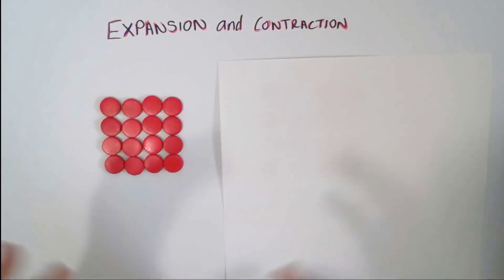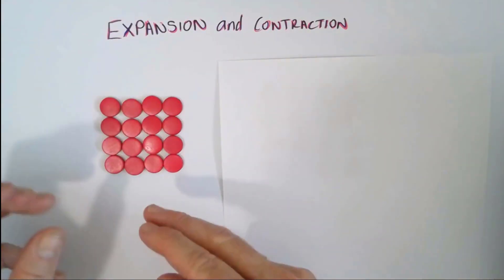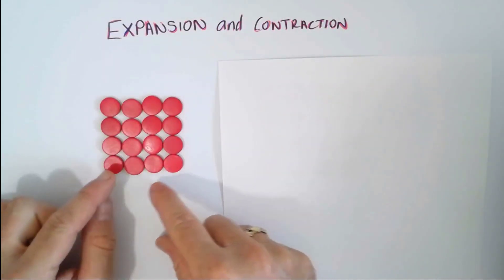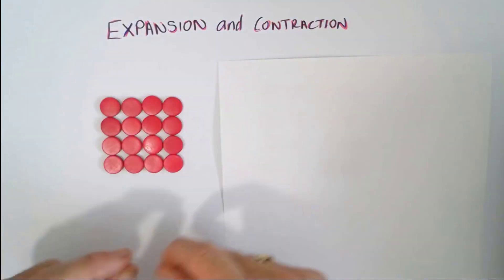The Particle Model says that all matter is made of particles, and those particles are attracted to each other and are always moving, even if it's a solid where the particles are quite tightly bound to each other.